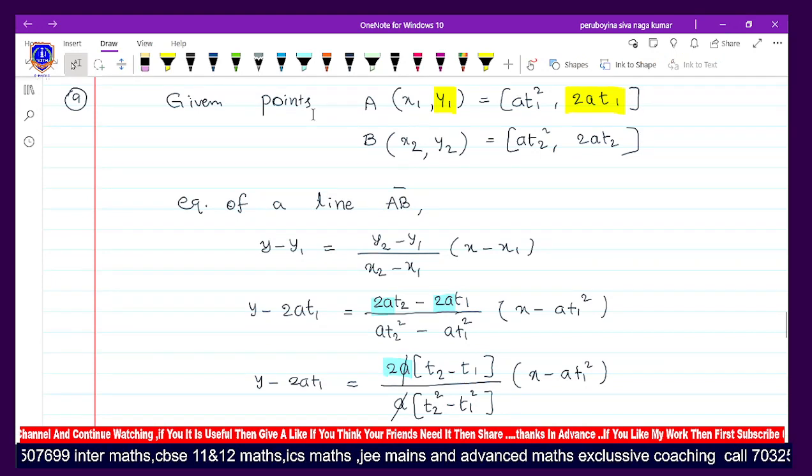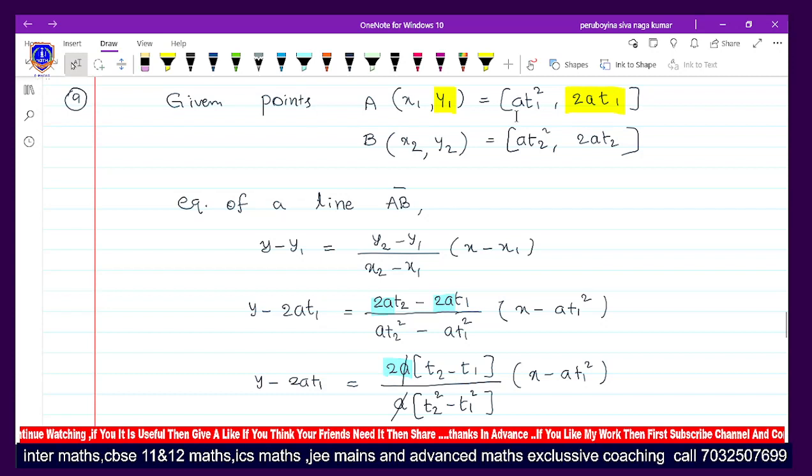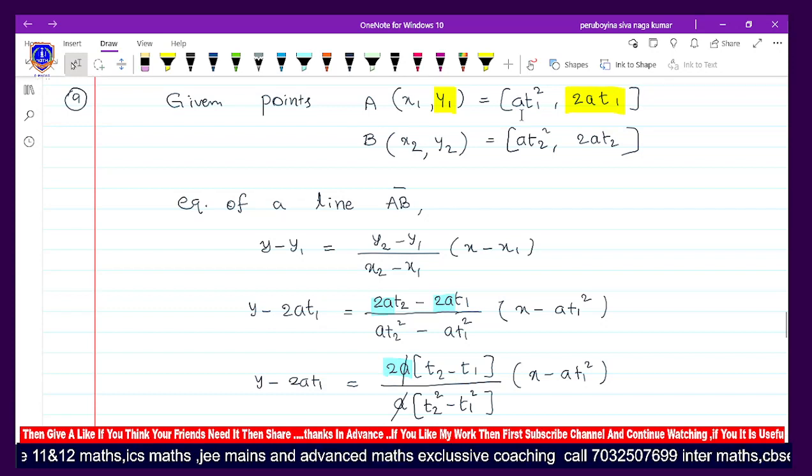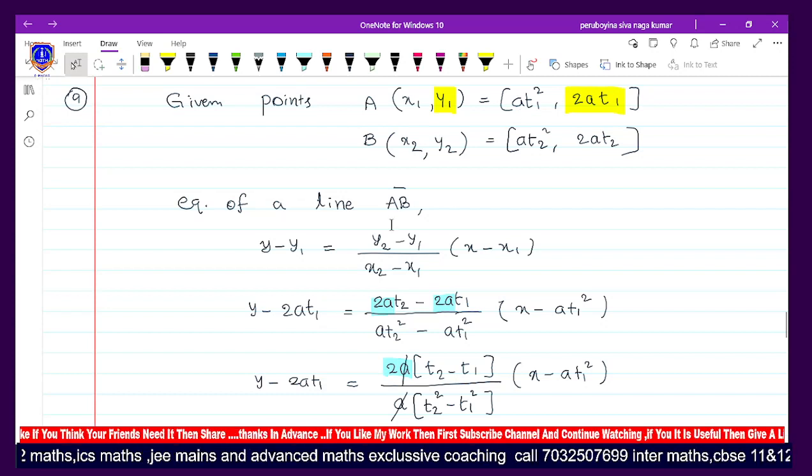Let's call this point capital A with coordinates (x₁, y₁). This is one of the given points. The second point, capital B, can be (x₂, y₂). So we have A(a₁², 2a₁) and B(a₂², 2a₂). The equation of line AB we need to find.